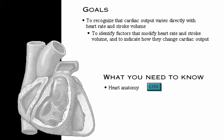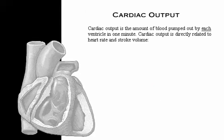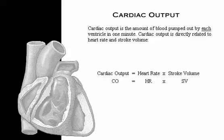Heart anatomy and the cardiac cycle are prerequisite topics. Cardiac output is the amount of blood pumped out by each ventricle in one minute and is directly affected by heart rate and stroke volume. Shown as an equation: cardiac output equals heart rate times stroke volume.